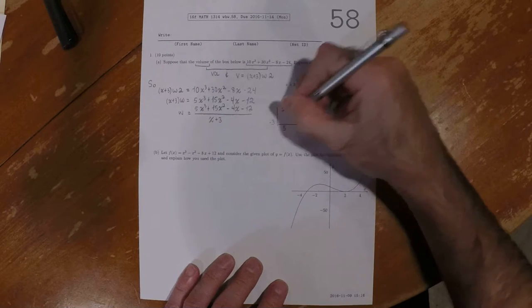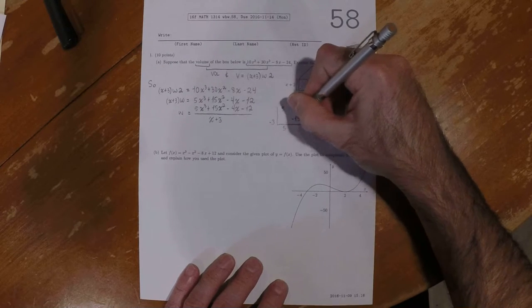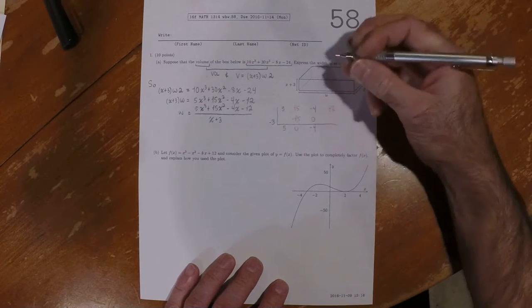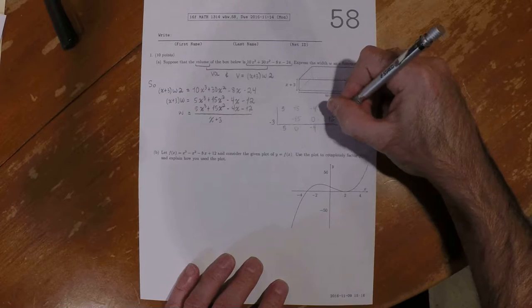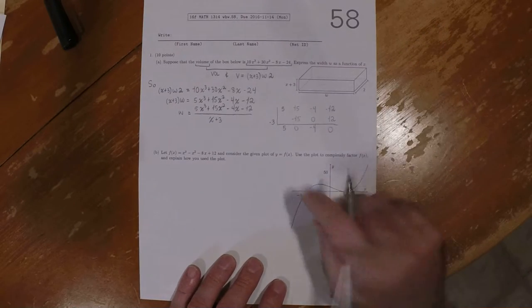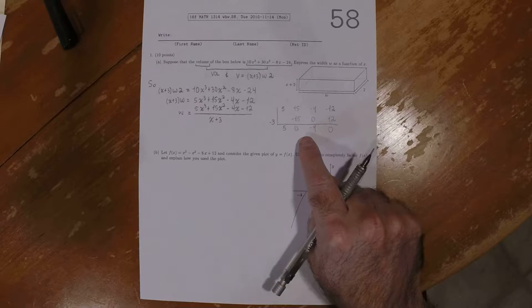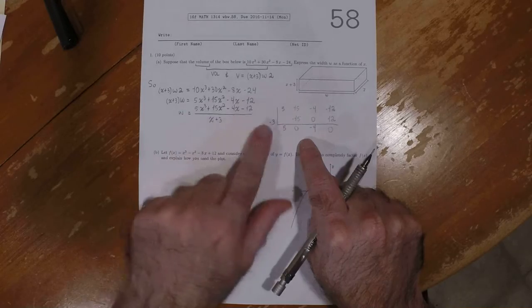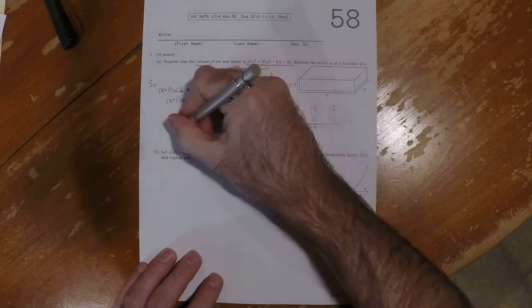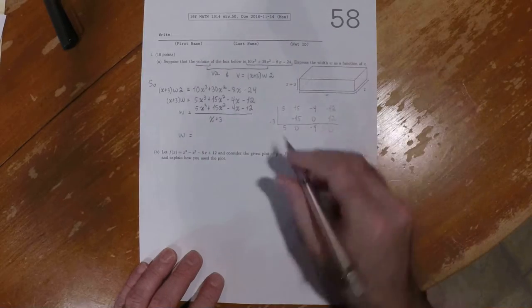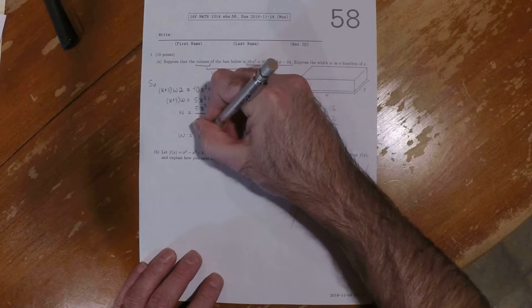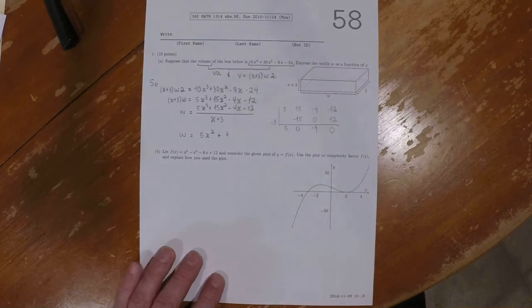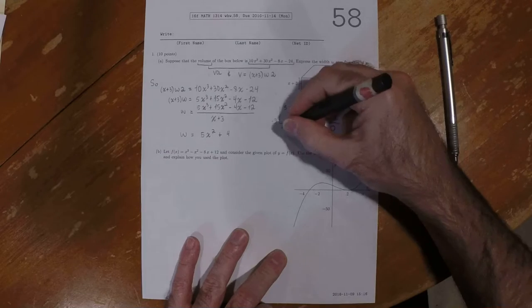So carry, multiply, add, multiply, add, multiply, add. So that means that this division, that division has no remainder. And the answer is 5x squared plus 4 minus 4.